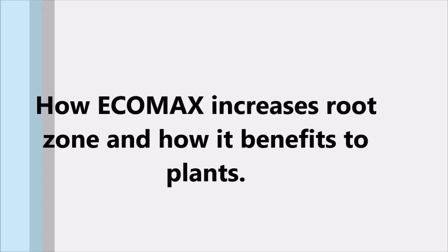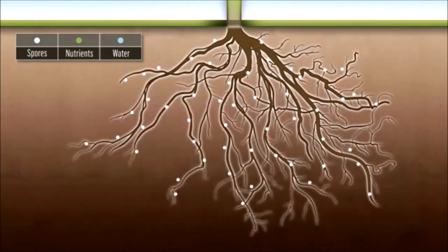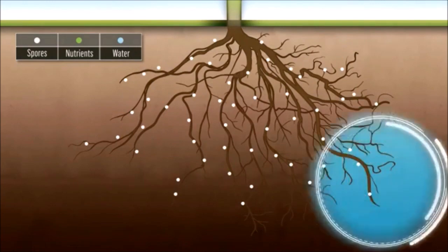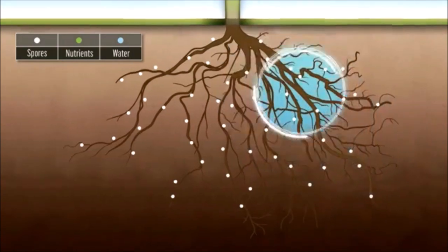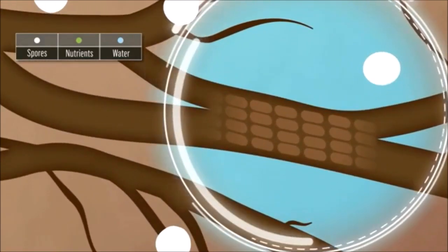How does this symbiosis take place? Mycorrhiza is the term used to describe the symbiotic relationship between mycorrhizal fungi and the plant's root system. Through that symbiosis, the fungi and the plant naturally develop and mutually reinforce each other without harming one another. Here are the three steps that explain how the symbiosis between mycorrhizal fungi and a plant take place.